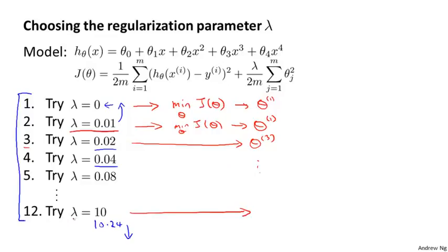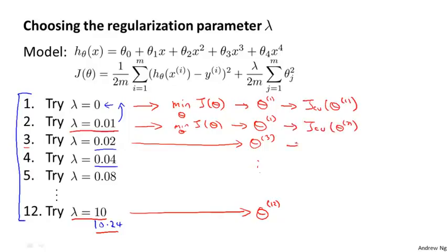For my final model with lambda set to 10 or 10.24, I end up with theta 12. Next, I can take all of these hypotheses and use my cross validation set to evaluate them. I evaluate each model on my cross validation set, measuring the average squared error of each parameter vector theta, and pick whichever of these 12 models gives me the lowest error on the cross validation set.